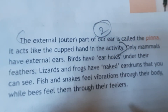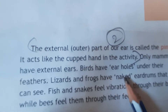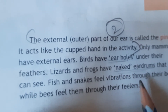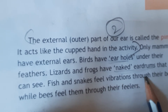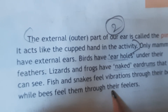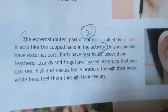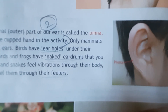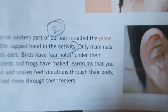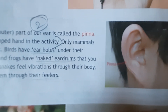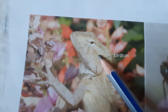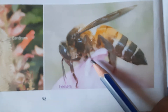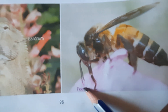Mammals like cows, dogs, and cats have external ears. But birds have ear holes under their feathers. Lizards and frogs have naked eardrums that you can see directly. Fish and snakes feel vibration through their body, while bees feel them through their antennae. So different kinds of creatures listen through different ways. Human beings have a pinna, and with the help of the pinna, sound is directed and goes inside the ear so that we can hear.